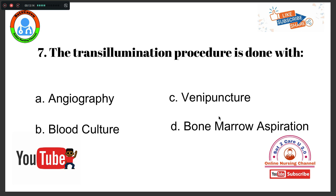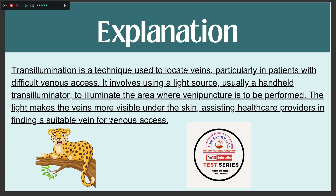Question number 7: The transillumination procedure is done with Option A, angiography. Option B, blood culture. Option C, venipuncture. Option D, bone marrow aspiration. The right answer is Option C, venipuncture. Transillumination is a technique used to locate veins, particularly in patients with difficult venous access. It involves using a handheld transilluminator light source to illuminate the area where venipuncture is to be performed, making veins more visible under the skin and assisting healthcare providers in finding a suitable vein for venous access.